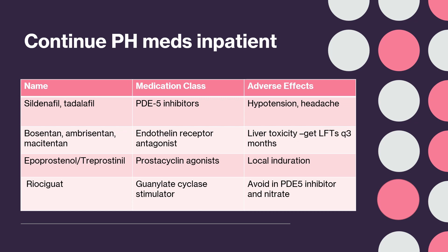Bosentan and other endothelin receptor antagonists can cause liver toxicity, so check LFTs every 3 months. Epoprostenol and other prostacyclin agonists can cause local induration with surrounding erythema at the injection site. Finally, riociguat is a guanylate cyclase stimulator and should not be taken with PDE5 inhibitors or nitrates.